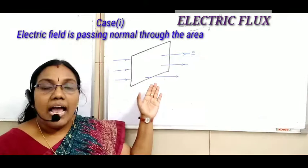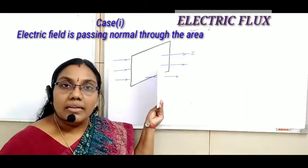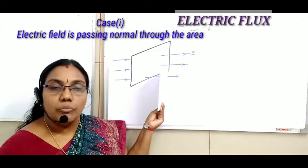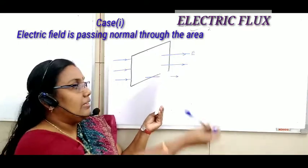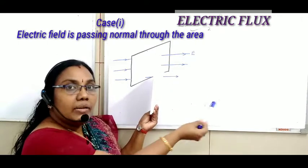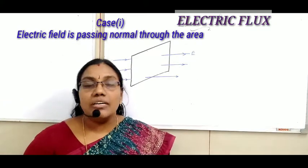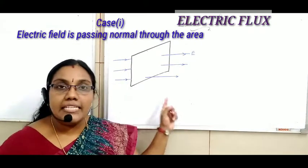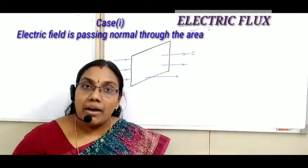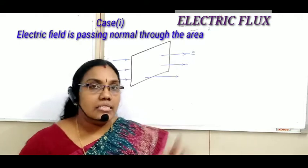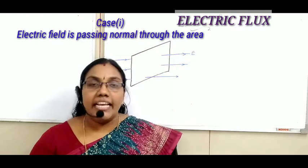Consider an area placed perpendicular to the board and the electric field is passing normally through the area. Since the area is placed perpendicular to the electric field, the maximum number of field lines pass through the given area. So in this case, flux will be maximum.